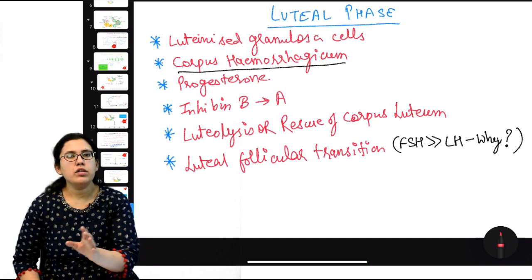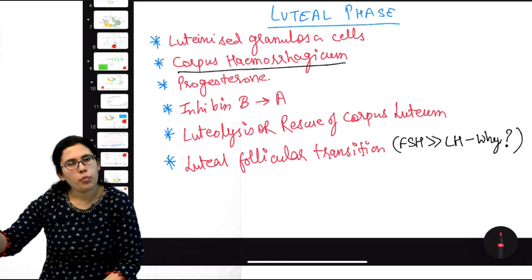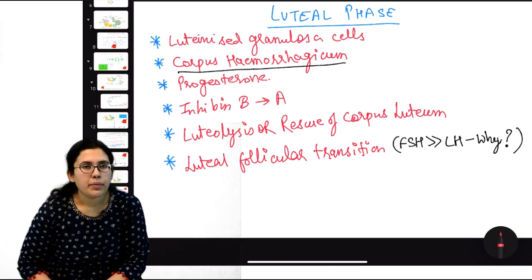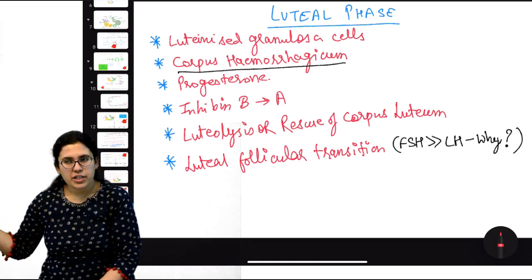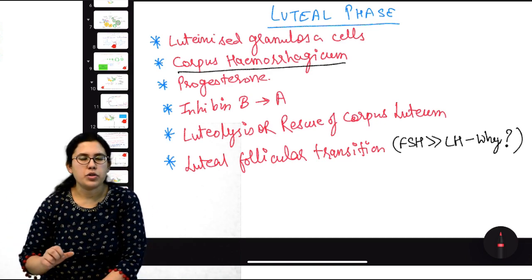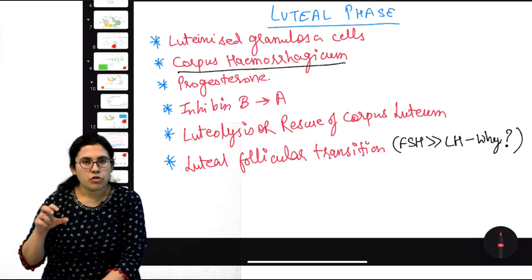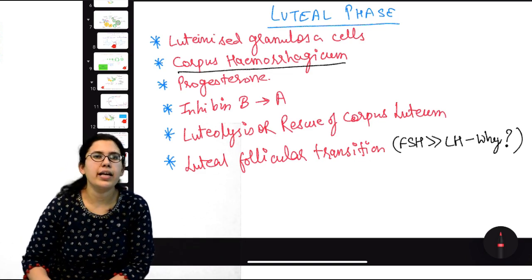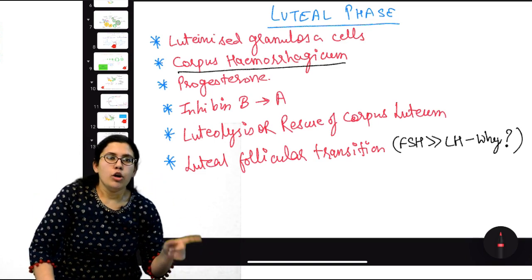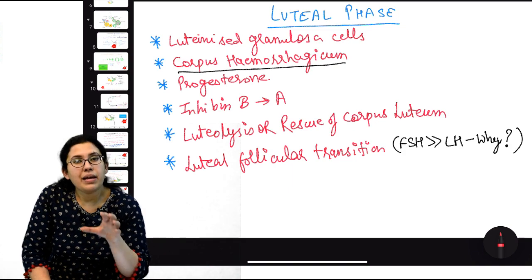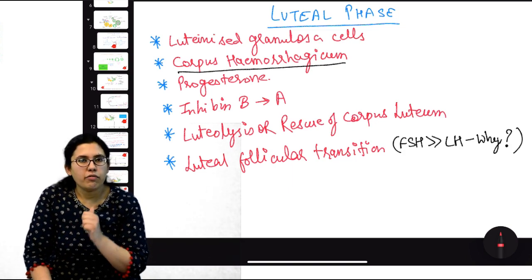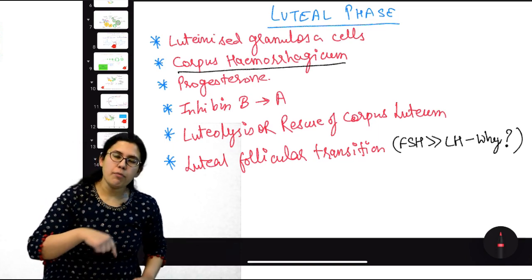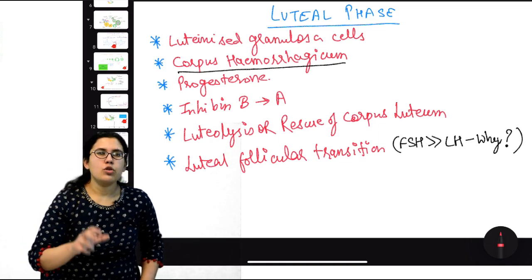This happens if there is no pregnancy. If pregnancy does happen — if sperm fertilizes the egg, an embryo forms and implants in the uterus. Once implanted, trophoblast cells secrete human chorionic gonadotropin (hCG). This hCG behaves like LH and signals the corpus luteum not to undergo lysis — this is called rescue of corpus luteum. The corpus luteum continues producing estrogen and progesterone to sustain early pregnancy.